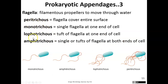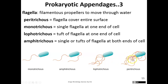Flagella can be arranged in different configurations. Monotrichous flagella have one single flagellum at one end of the cell. Amphitrichous have one flagellum at each end. Lophotrichous flagella form a tuft on one side of the cell. Peritrichous flagella cover the entire cell surface. E. coli, for example, has peritrichous flagella — they're covered in flagella like hair everywhere, which is really visible after doing a flagella stain.